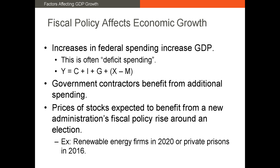The expectation of changes in public policy will also drive returns in different industries. Different political parties are more amenable to spending in different industries. For example, when Donald Trump became president in 2016, the private prison industry saw very positive returns. Meanwhile, when Joe Biden won election in 2020, renewable energy firms saw very high returns around the period of the election. These returns reflect changing investor expectations about the opportunities for these firms in the macroeconomic environment.